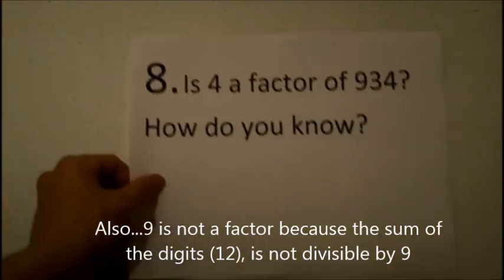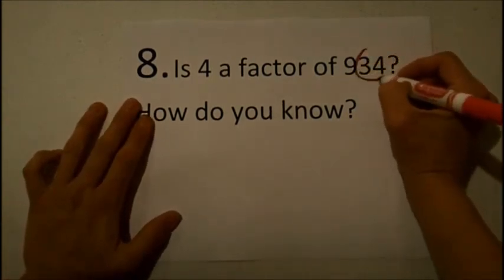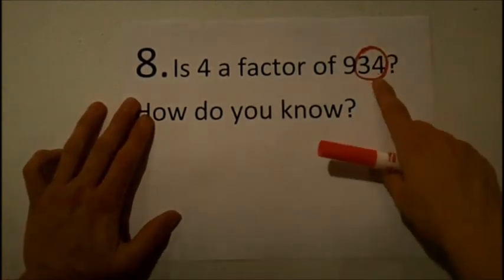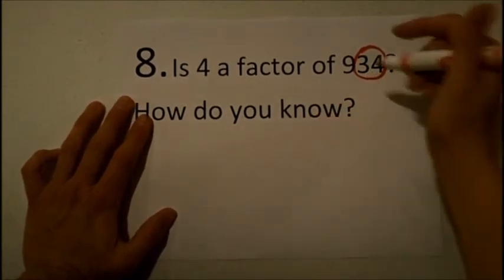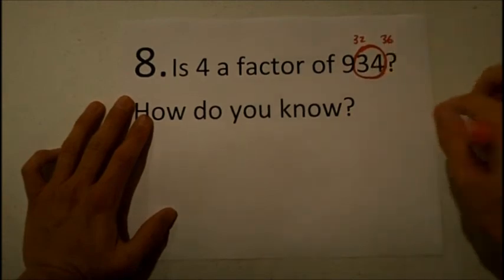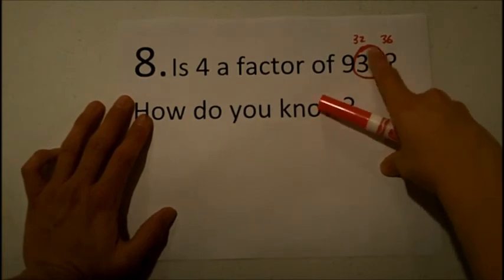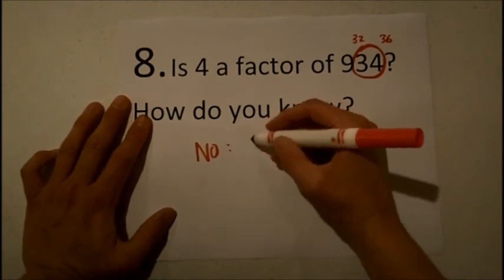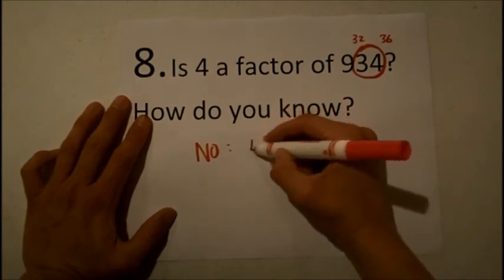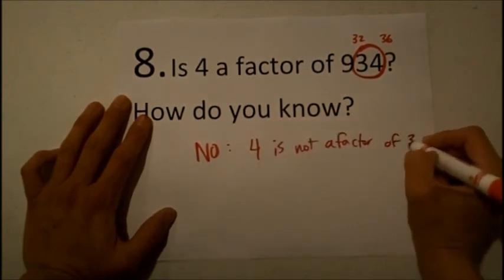8 says, is 4 a factor of 934, and how do you know? So for the 4s trick, we just look at the last two digits and ask ourselves if 4 is a factor of that number, 34. When I count by 4s, 4, 8, 12, 16, 20, 24, 28, and 32, 36, and last comes 40. So since I don't say 34, I know that 4 is not a factor of 34, nor is it a factor of 934. So no, it's not. And the reason that you would write is because 4 is not a factor of 34.